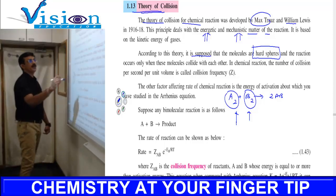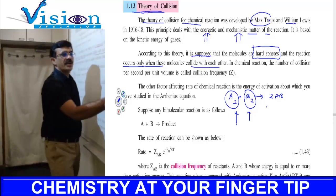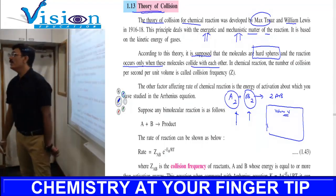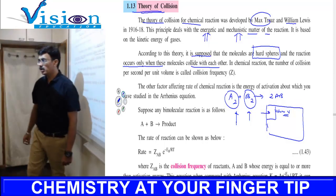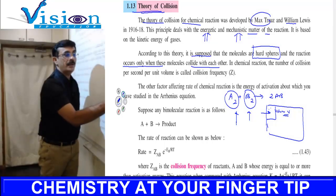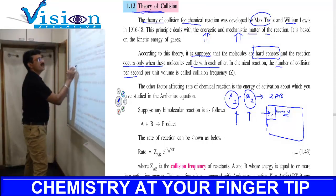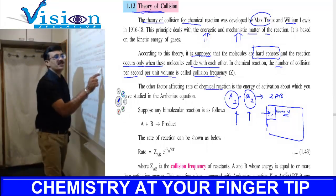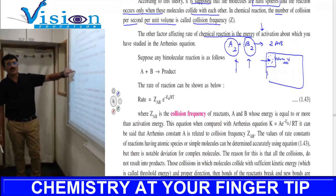Reaction only occurs when molecules collide with each other. Suppose you have a container where the reaction is happening with volume V. They find out how many collisions are taking place in a unit volume per second. The number of collisions per second per unit volume is called collision frequency Z.